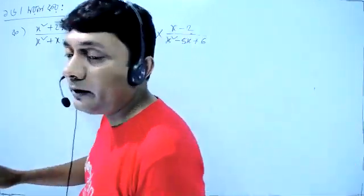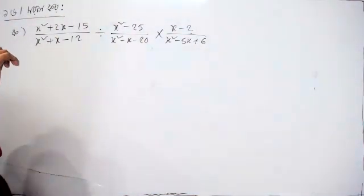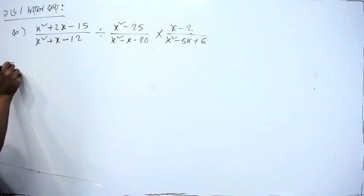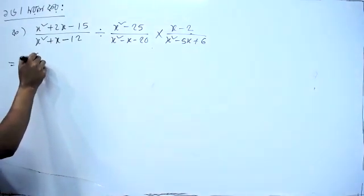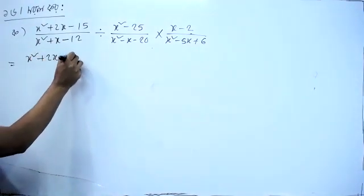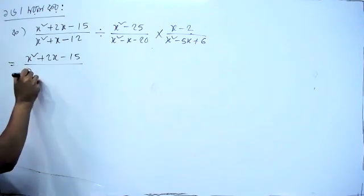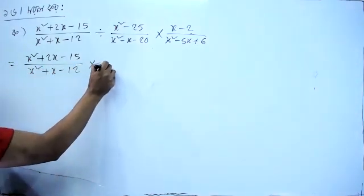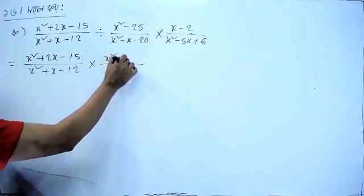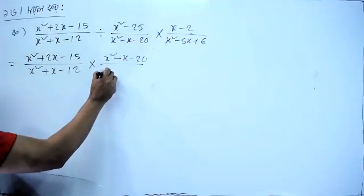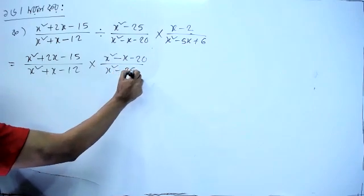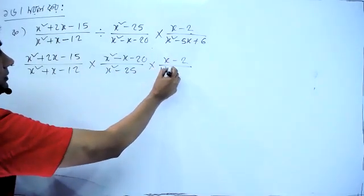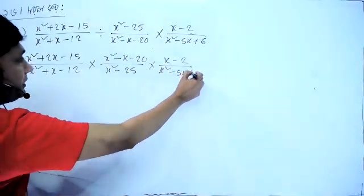So, let's take a look at the question. x² + 2x - 15 by x² + x - 12. This is the question. So, x² - x - 22, and x² - 25 into x - 2 by x² - 5x + 6.